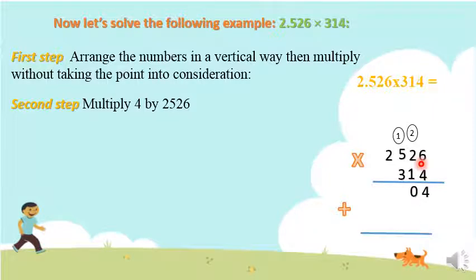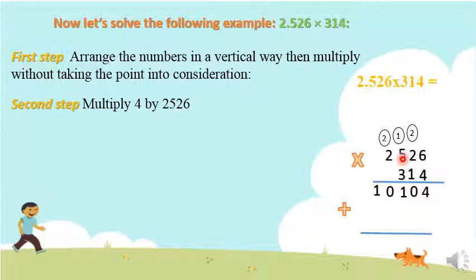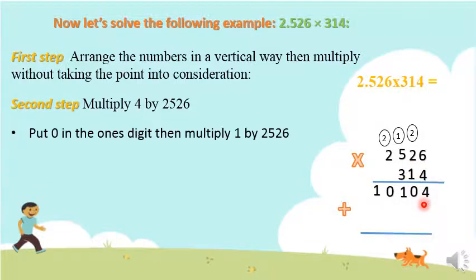4 times 6 is 24 — write 4 and carry 2. 4 times 2 is 8, plus 2 is 10 — write 0 and carry 1. 4 times 5 is 20, plus 1 is 21 — write 1 and carry 2. 4 times 2 is 8, plus 2 is 10. When moving to the tens digit, put 0 under the ones or leave an empty space. Then multiply 1 by the first number. You can cross out the carry-outs so you will not feel confused.